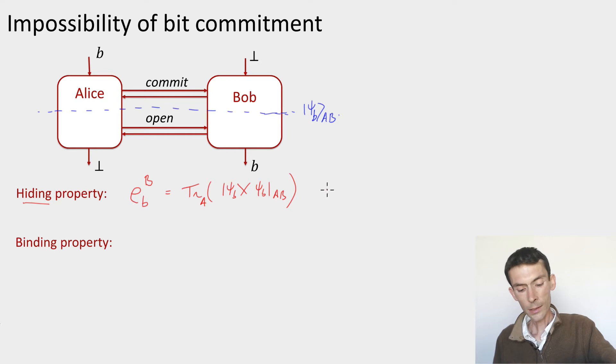And so the hiding property says that rho_0 should be equal to rho_1, because if they're a little bit different, then there would be a measurement that slightly distinguishes them. And in this way, Bob would obtain some information about Alice's input. So if the protocol is hiding, these two reduced densities should be the same.